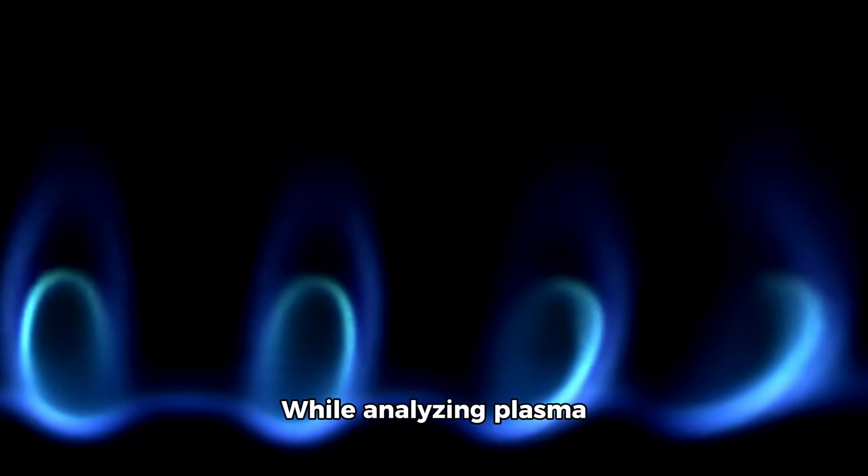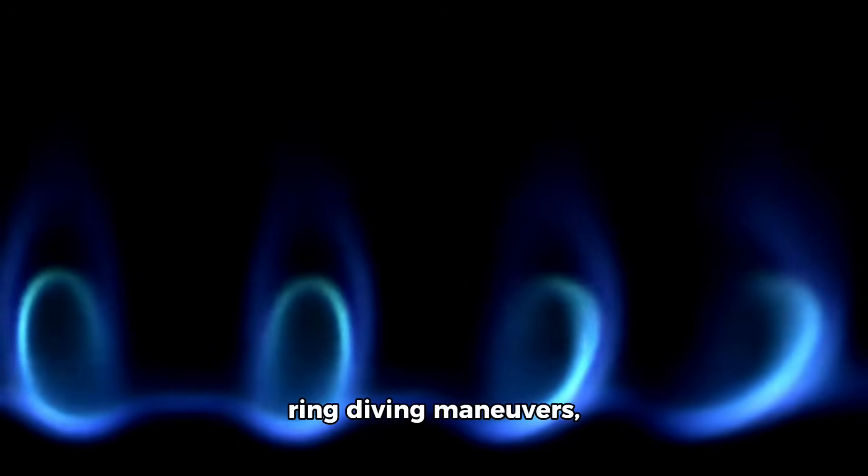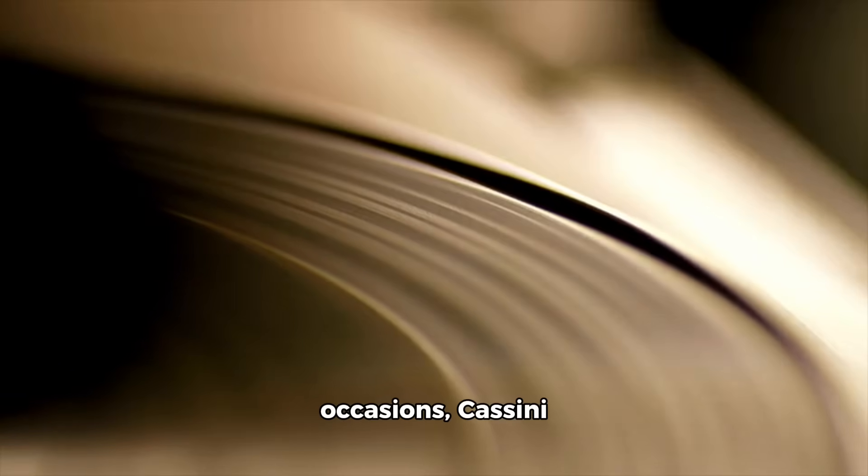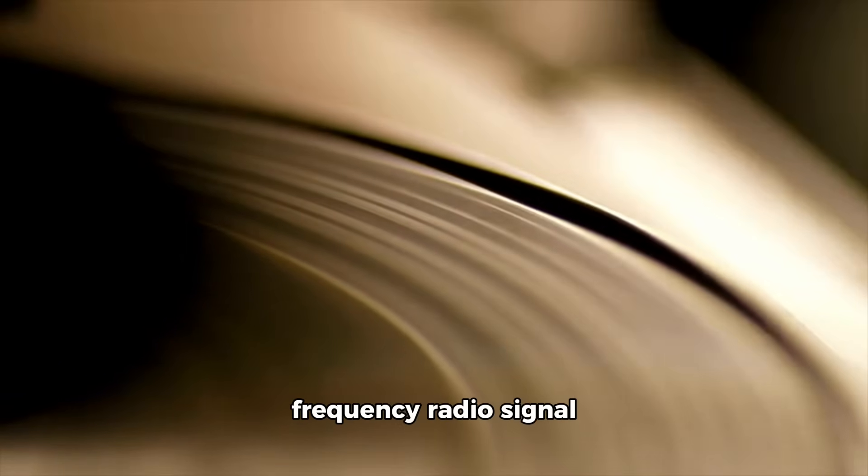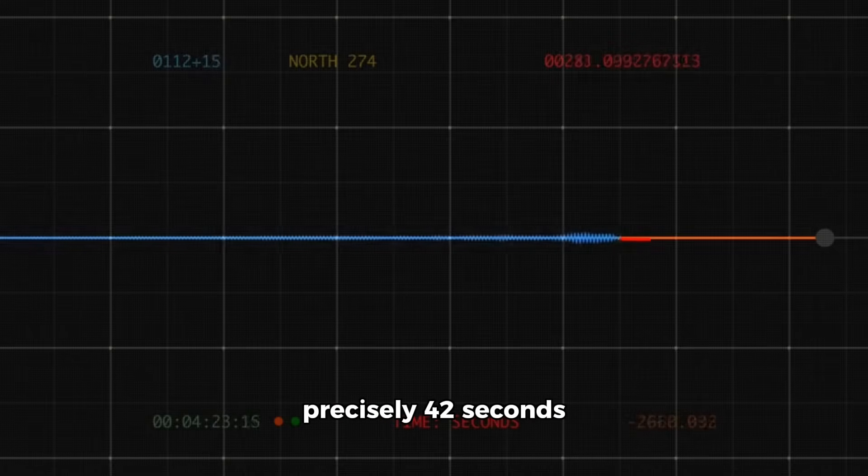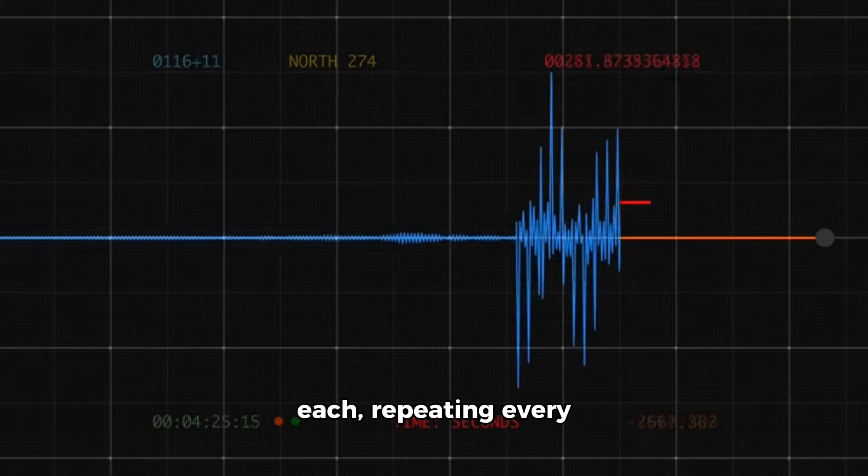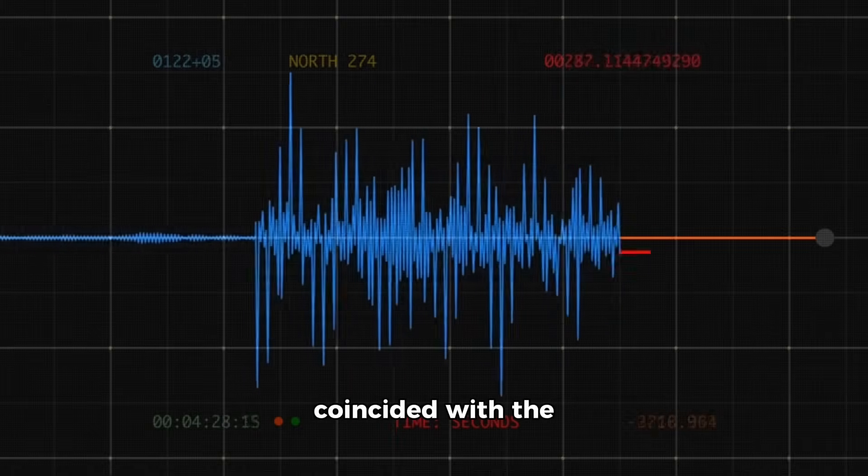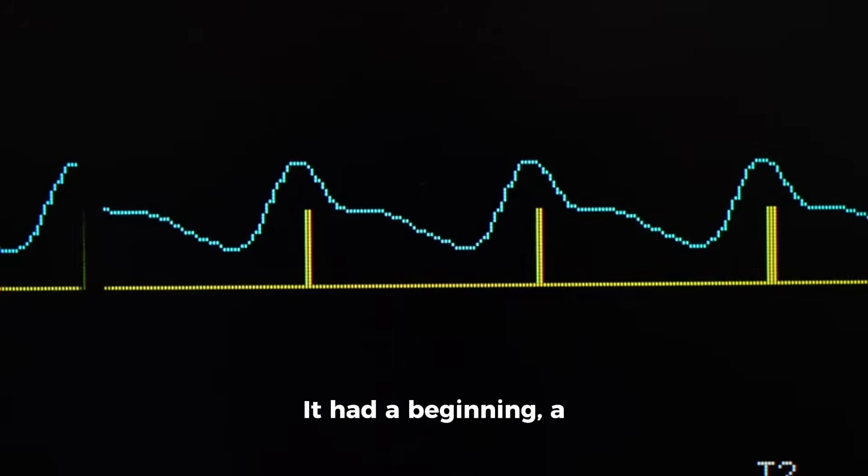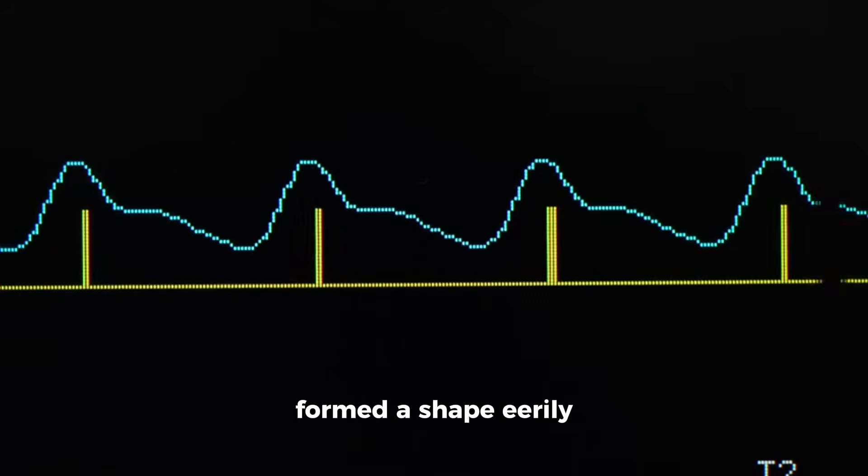While analyzing plasma wave data from Cassini's ring-diving maneuvers, engineers noticed an unexplained anomaly. On three separate occasions, Cassini recorded an ultra-low-frequency radio signal just above the threshold of detection. These pulses lasted precisely 40 seconds each, repeating every 19 hours, and always coincided with the spacecraft's crossing of the ring plane. What caught scientists off guard was the structure of the signal. It had a beginning, a peak, and a symmetrical fade. When plotted visually, the signal formed a shape eerily similar to a sine wave overlaid with a digital carrier. It resembled a beacon.